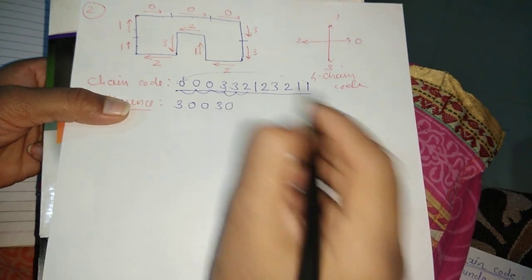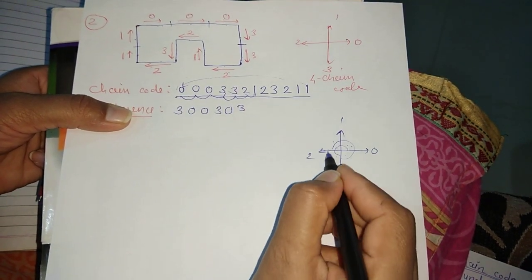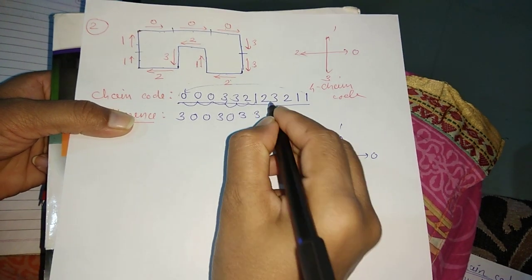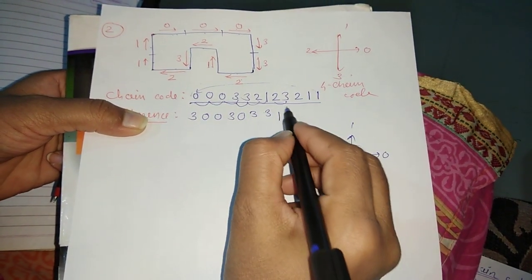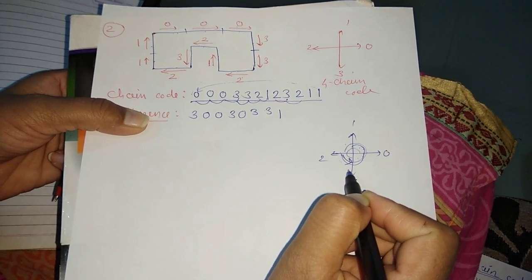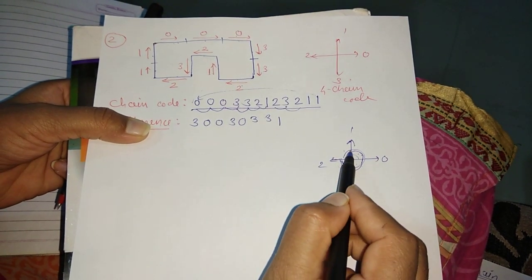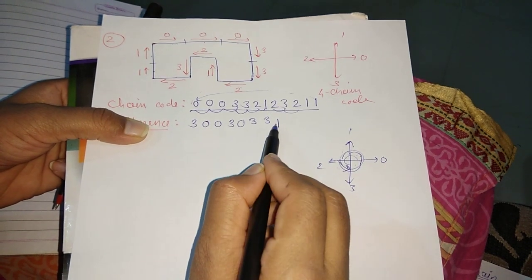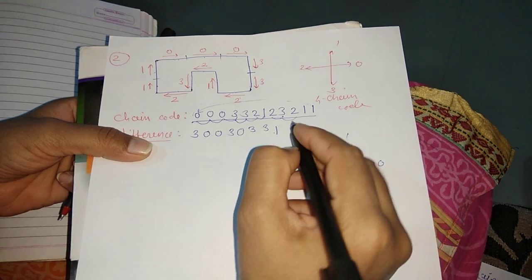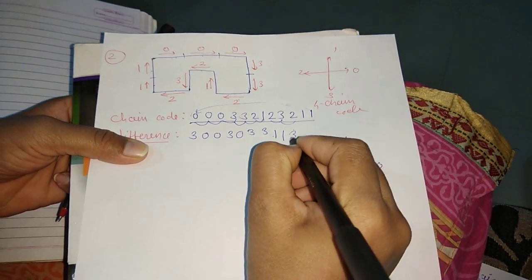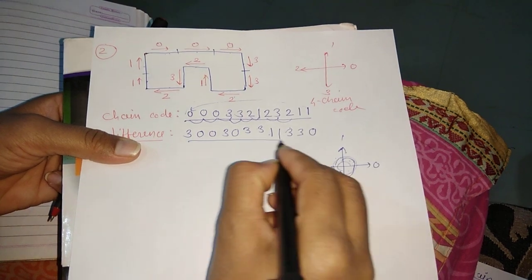Continuing the difference calculations: 3 minus 3 gives 0, 2 minus 1 gives 1, 1 minus 2 anticlockwise gives 3, 2 minus 3 gives 3, 3 minus 2 gives 1, 2 minus 1 gives 1, 1 minus 1 gives 0. So the full difference sequence is: 1, 0, 0, 3, 0, 1, 3, 3, 1, 1, 0, 3.